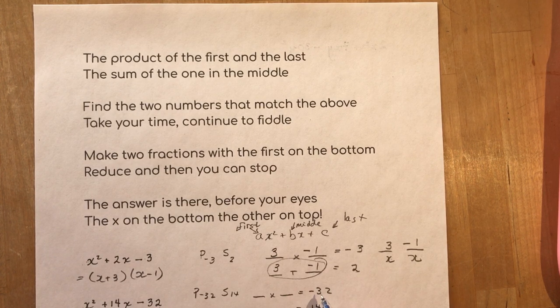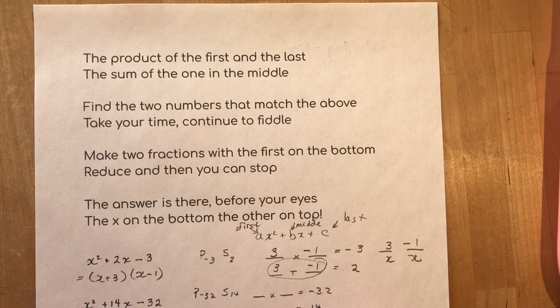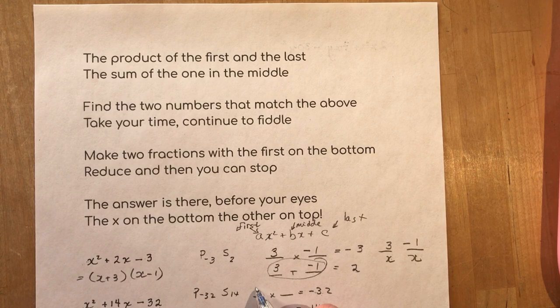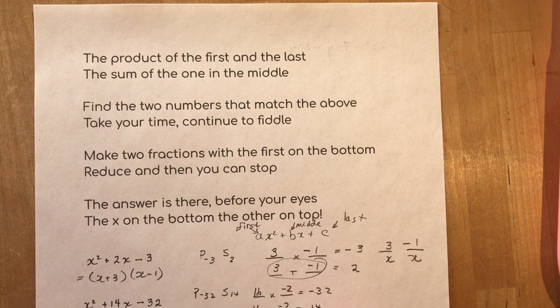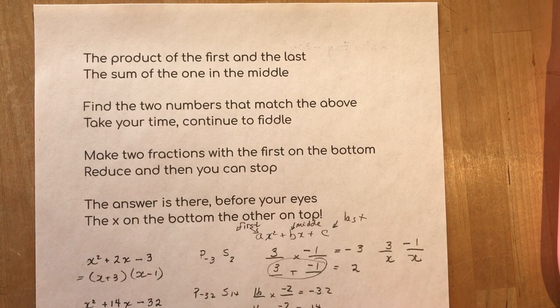Now again we have a negative product so one is negative one is positive but the bigger one has to be positive because our sum is positive. I'm sure you've guessed this by now. It's 16 and minus two. If you don't know your times tables it will be difficult for you.